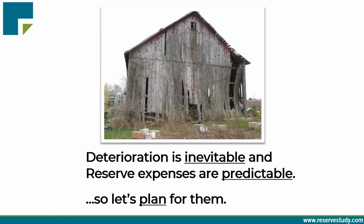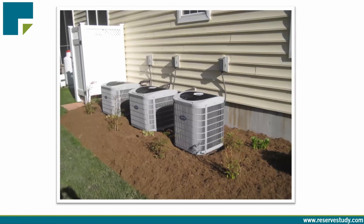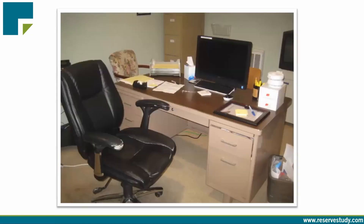Let's practice by taking an imaginary walk around a few associations, applying the three-part test. On the side of some buildings, the governing documents say the air conditioning condensers are private property — the responsibility of individual owners — so they fail test number one and shouldn't appear in the reserve component list. In the on-site manager's office, the equipment is owned by the management company, not the association. This is all on the management company; we shouldn't be funding these assets through reserves.